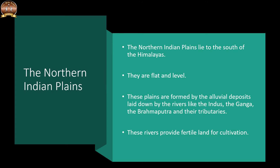The next physical division is the Northern Indian Plains, which lie to the south of the Himalayas. They are generally level and flat, formed by the alluvial deposits laid down by rivers like the Indus, the Ganga, the Brahmaputra and their tributaries. These river plains provide fertile land for cultivation, which is why there is a high concentration of population in these plains.